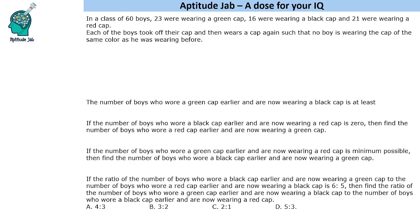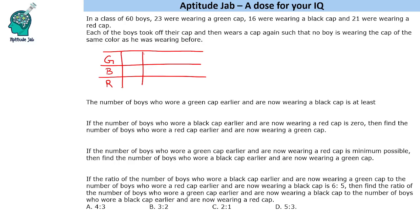Since we have a group of questions, we can formulate a table. The columns represent green, black, and red caps, and the total numbers given are 23, 16, and 21.